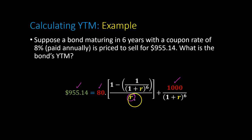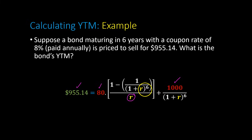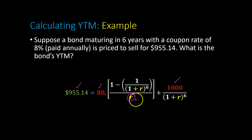Using the equation just shown, you're given the price of the bond, you know the annual coupon payment, and you know the face value — what you need to do is figure out R. Now, if you tried to do this manually, it would be quite difficult because you have R to the power of six. Fortunately, you can solve for R rather easily using Microsoft Excel, and this is what I'm going to show you now.